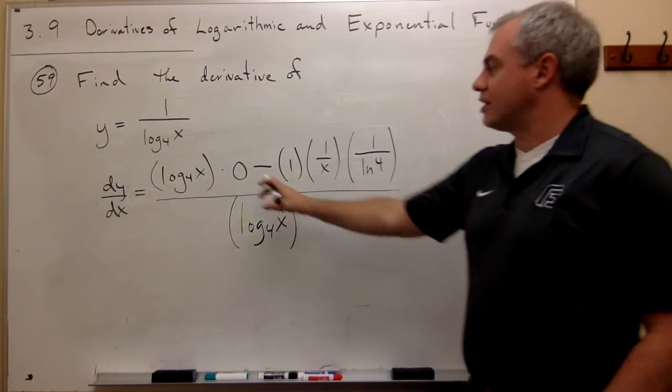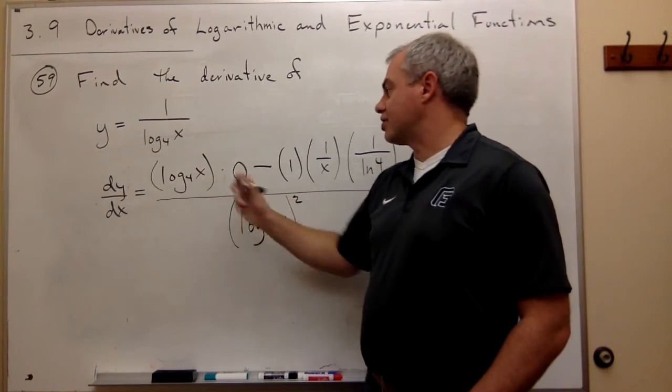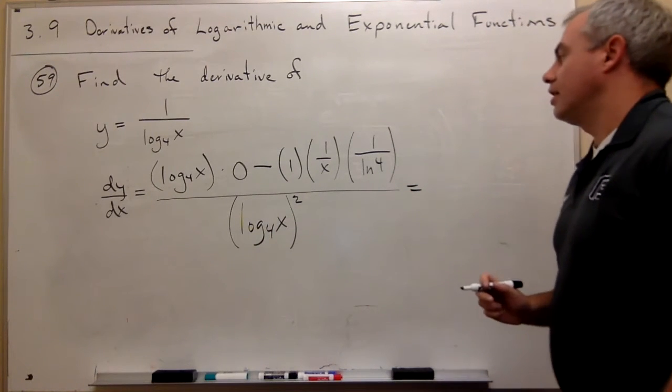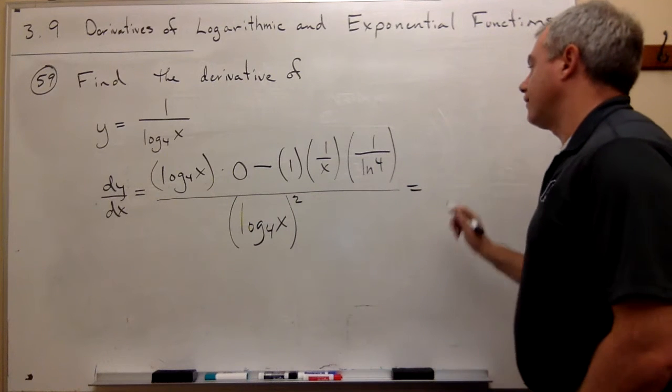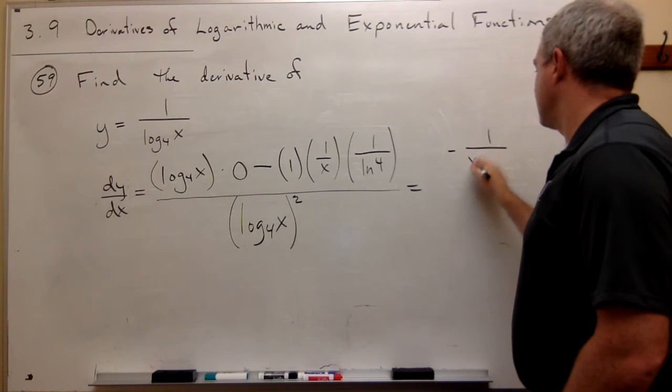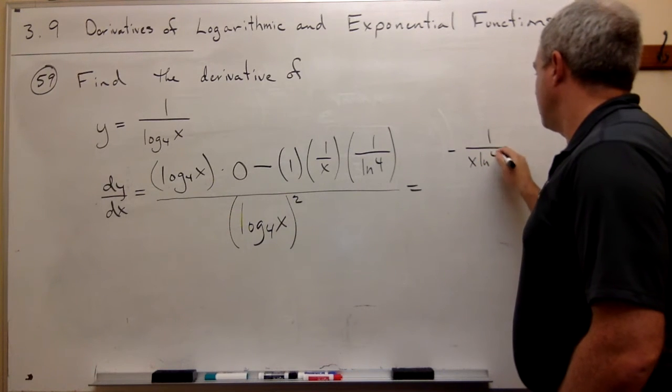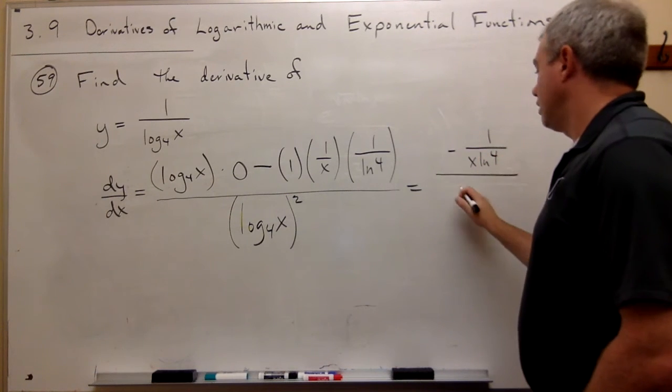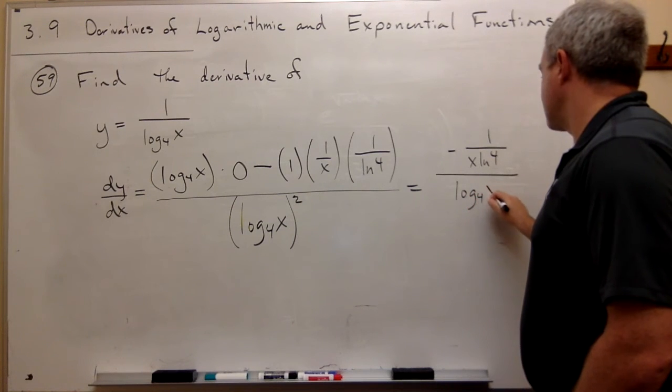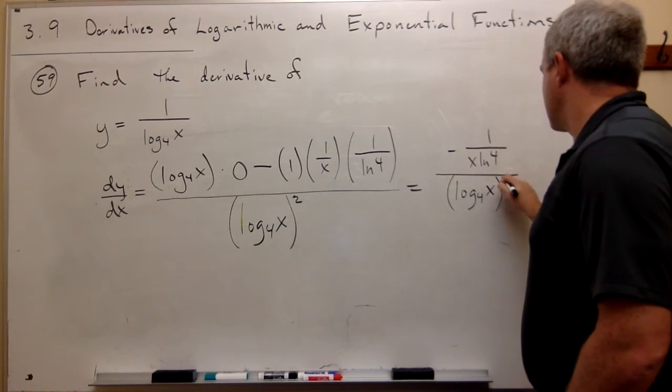Now obviously, 0 times this is just 0, so we could rewrite this a little cleaner. On top, we'd have negative 1 over x ln 4, over log base 4 of x quantity squared.